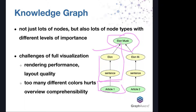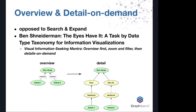Another reason why it's challenging to display a huge graph fully is the technical aspect: slow rendering performance in the browser scales with the count of nodes. The typical user interaction in most UIs starts with searching for a node and then expanding its neighborhood, but this completely misses the high-level picture.